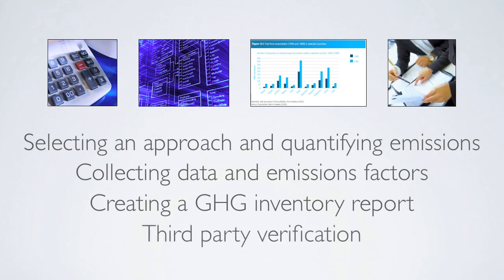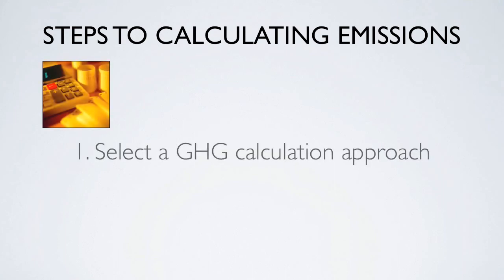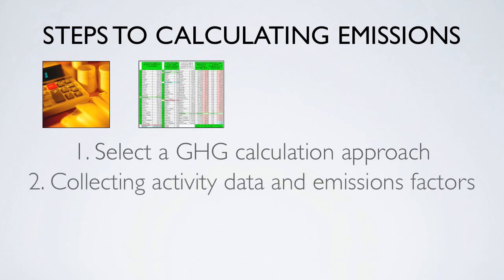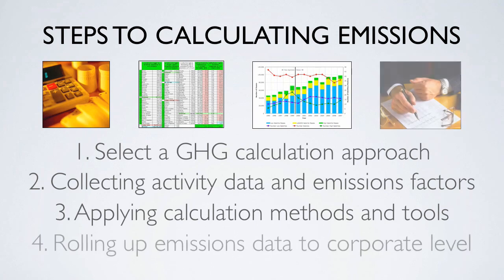In this module, we will introduce the fundamental elements of calculating greenhouse gas emissions. Once the inventory boundary has been established, calculating emissions is a straightforward four-step process: first, selecting a calculation approach; second, collecting activity data and emission factors; third, applying calculation methods and tools; and finally, rolling up the emissions data to the corporate, institutional, or entity level.